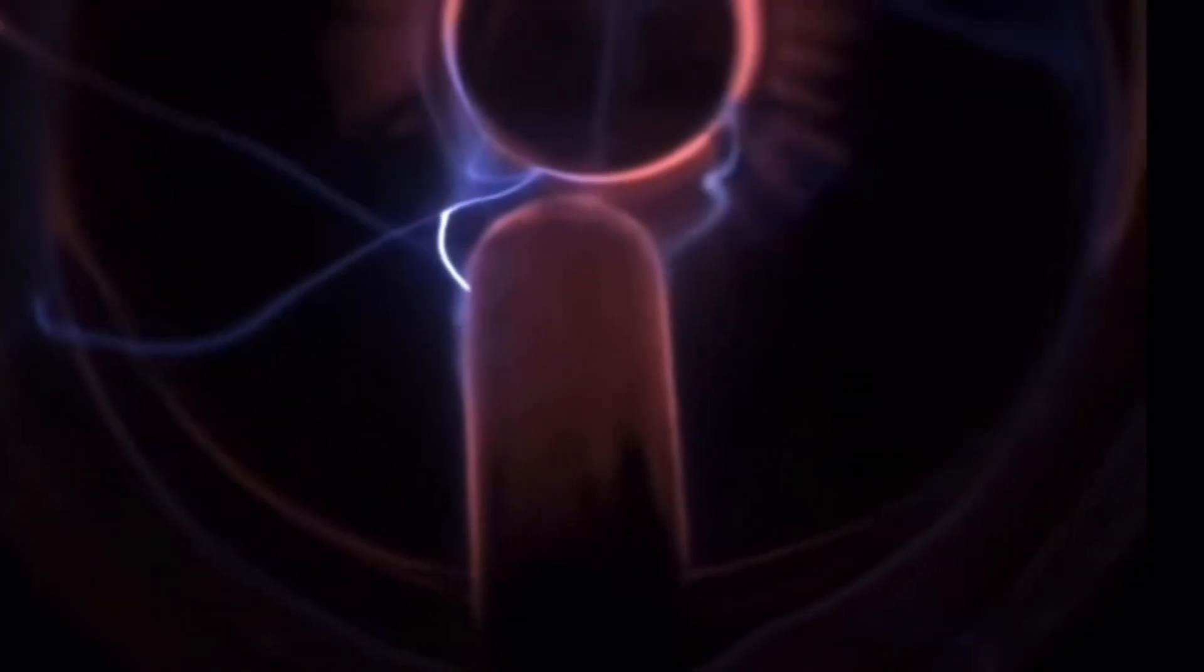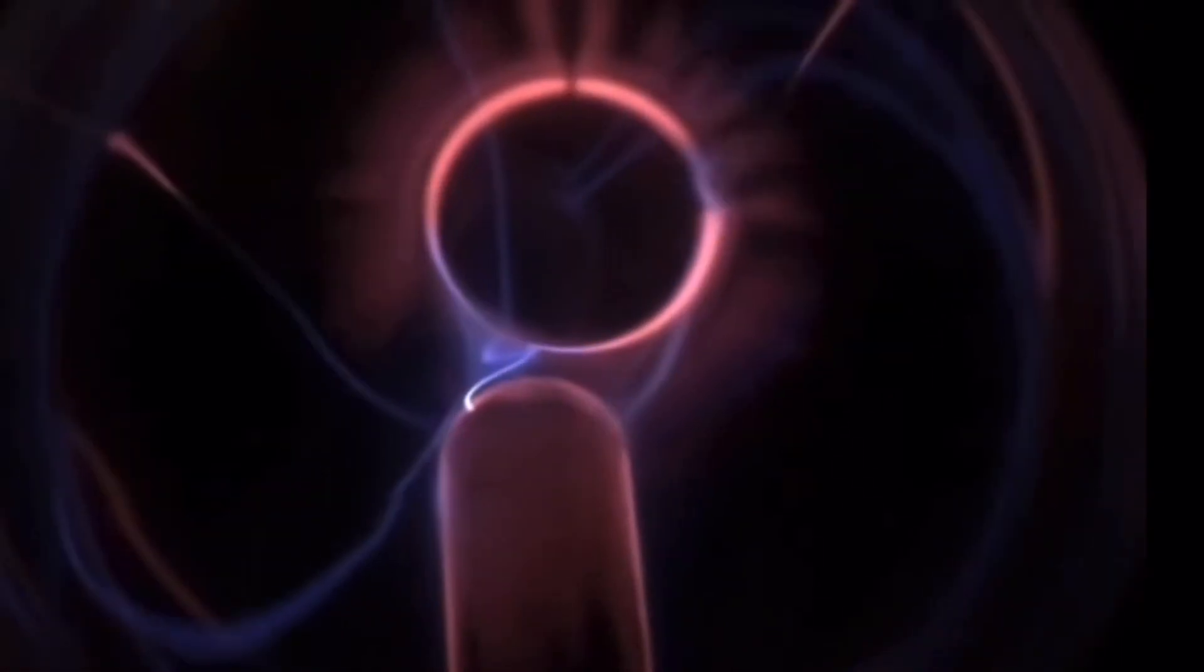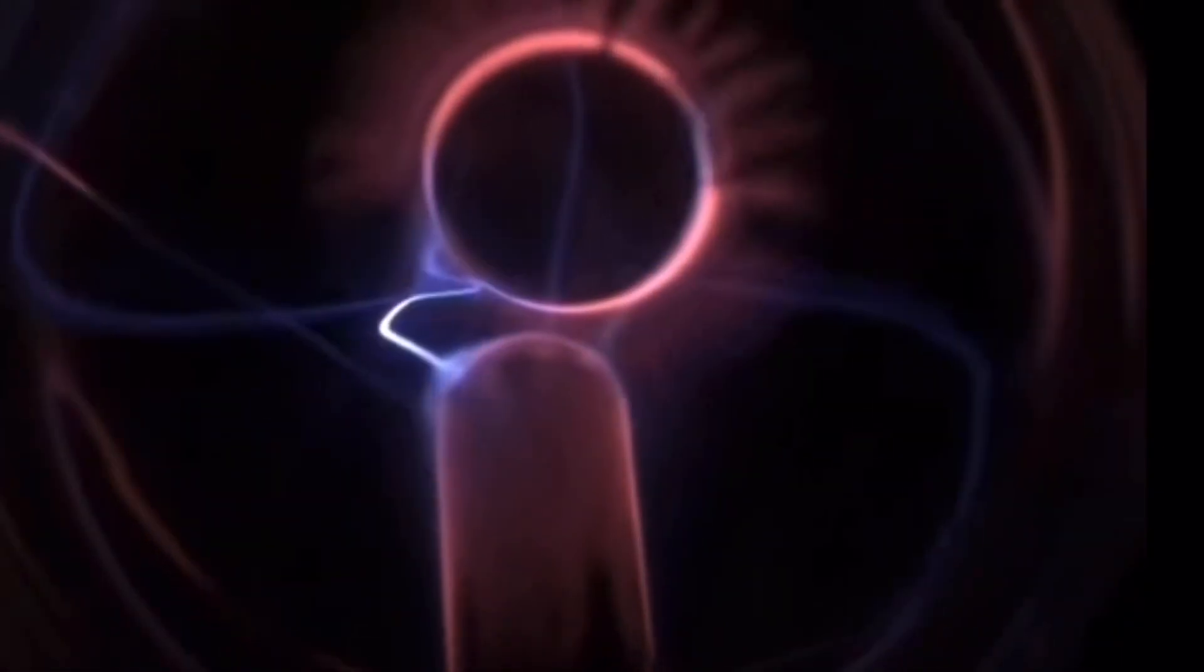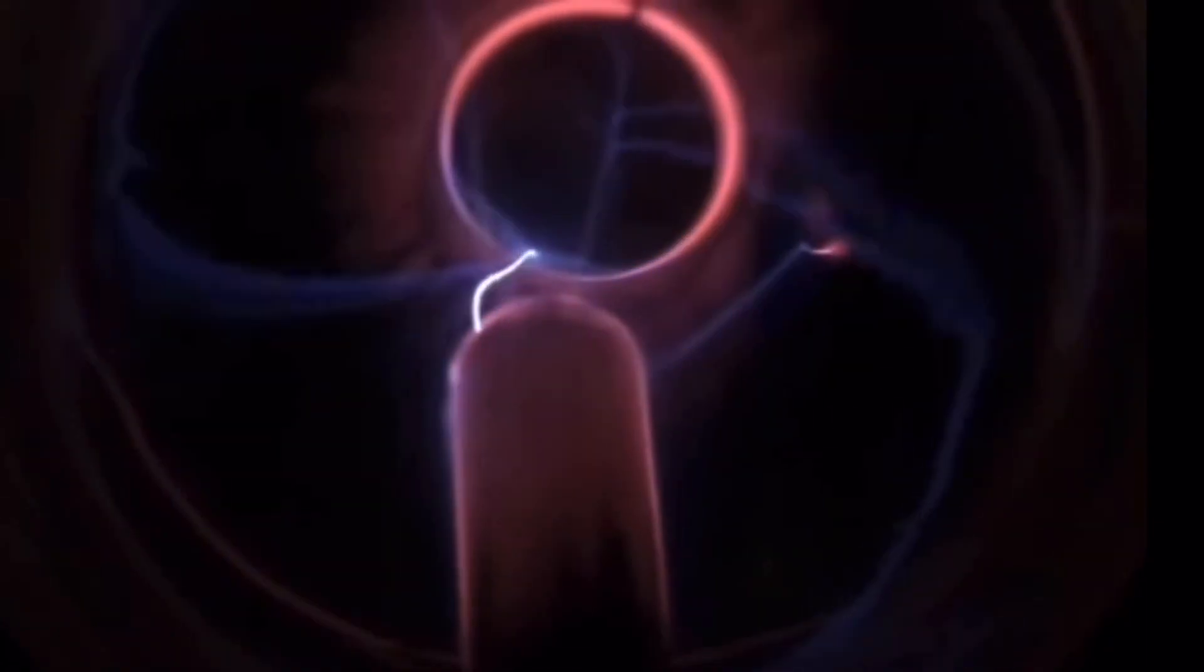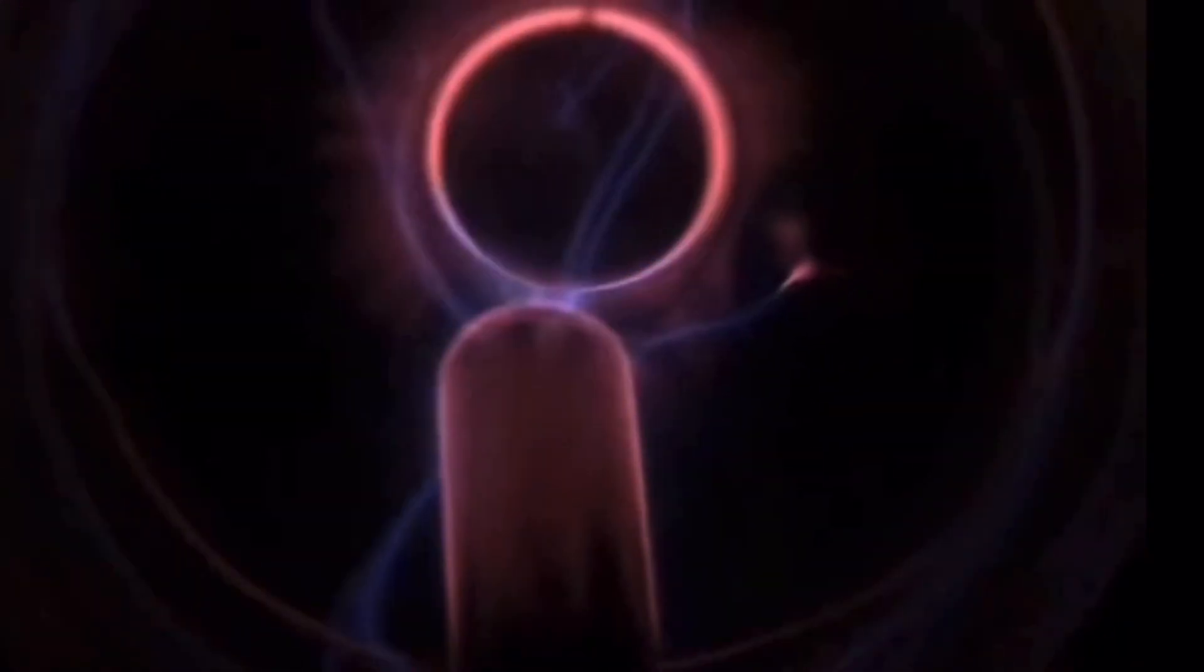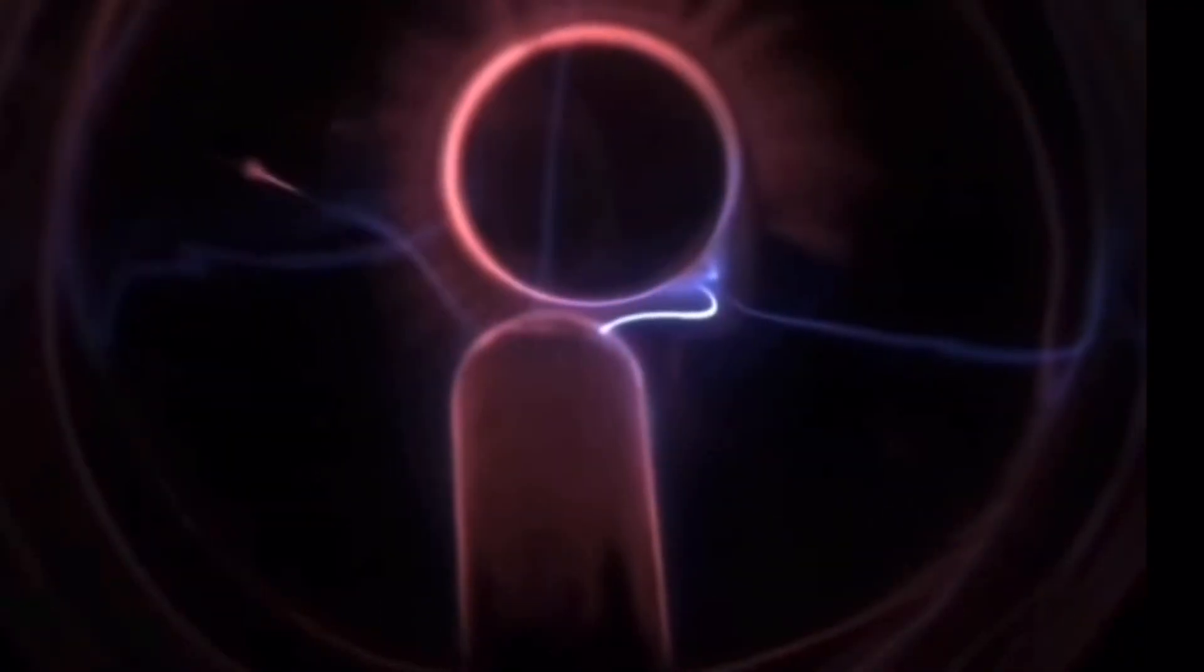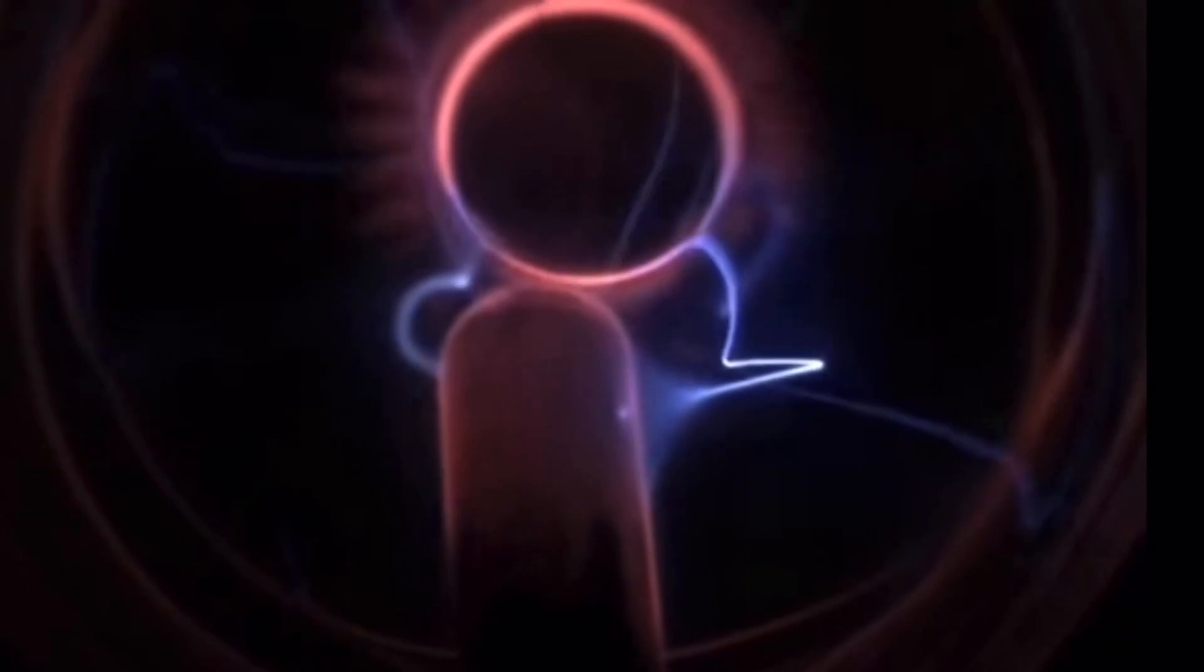Plasma, electric currents, and cosmic behavior. The Electric Universe Theory highlights the pervasive presence of plasma throughout the universe. Plasma, often referred to as the fourth state of matter, consists of ions and free electrons. It behaves in ways distinct from solids, liquids, and gases, primarily due to its electrical conductivity. Electric currents flowing through plasma create magnetic fields that, in turn, influence the plasma's behavior.